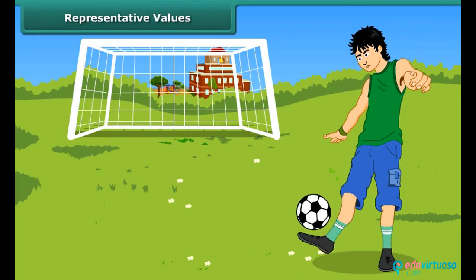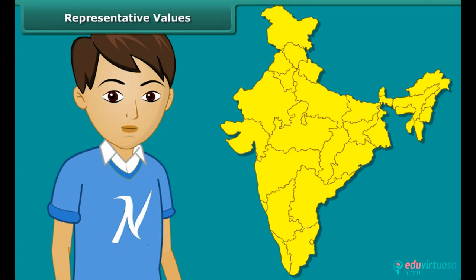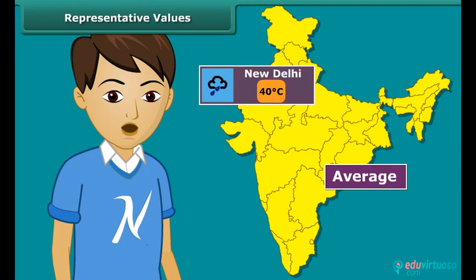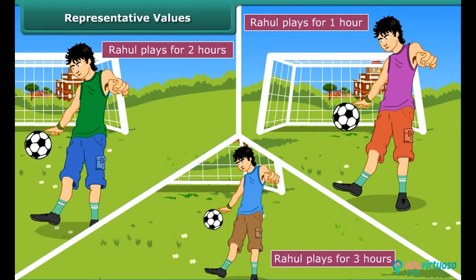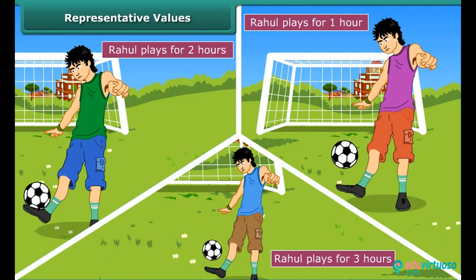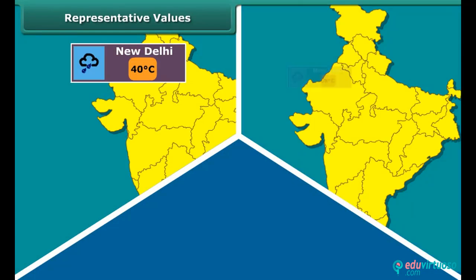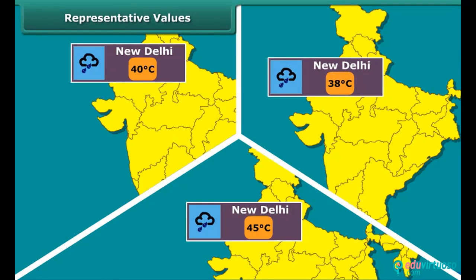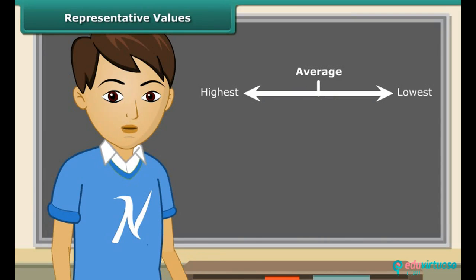Rahul spends on an average of about 2 hours daily for his outdoor games. The average temperature of New Delhi at this time of the year is about 40 degrees Celsius. Have you noticed the word average? By average, we understand that Rahul usually plays for 2 hours — on some days he may play for fewer hours and on other days he may play longer. Similarly, the average temperature of 40 degrees Celsius means the temperature of New Delhi is around 40 degrees Celsius — sometimes less, sometimes more. Thus, we realize that average lies between the highest and the lowest value of the given data.